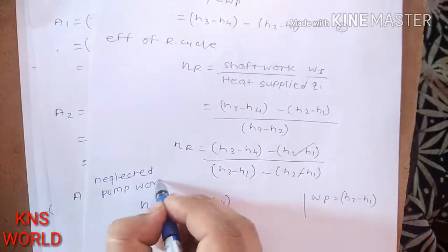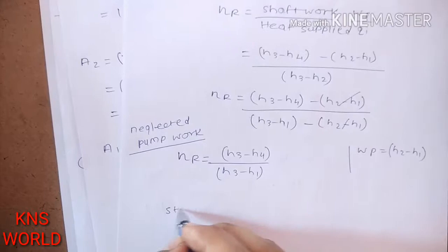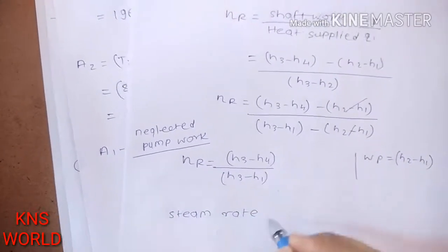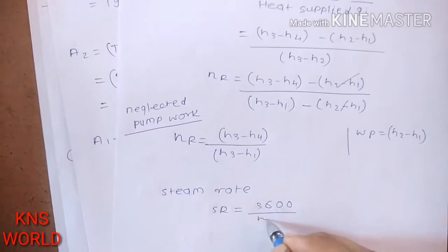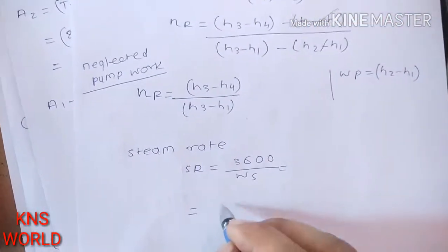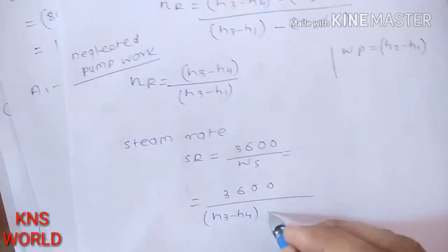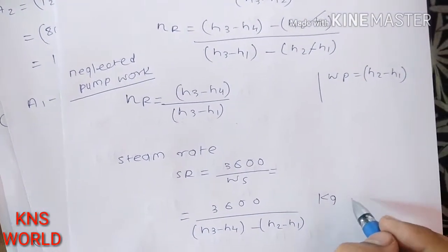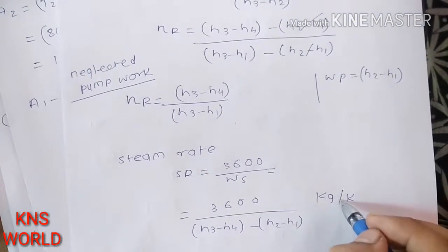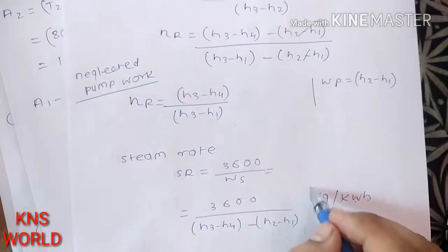Finally, the steam rate is found by: Steam Rate = 3600 / WS = 3600 / [(H3 minus H4) minus (H2 minus H1)]. The unit of steam rate is kg per kilowatt-hour.